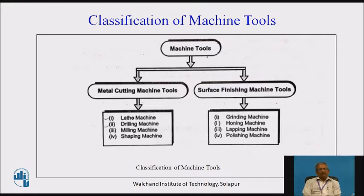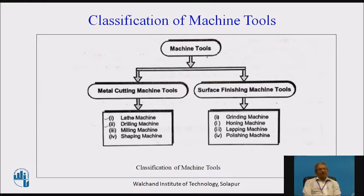Regarding surface finishing machine tools, we cannot remove more material, but as the name indicates, we carry out finishing operations where polished or super-finished surfaces are required. We use machines like grinding machines, which remove material in terms of microns — that is, one-thousandth of a millimeter. Some microns of material are removed to get the desired surface finish.